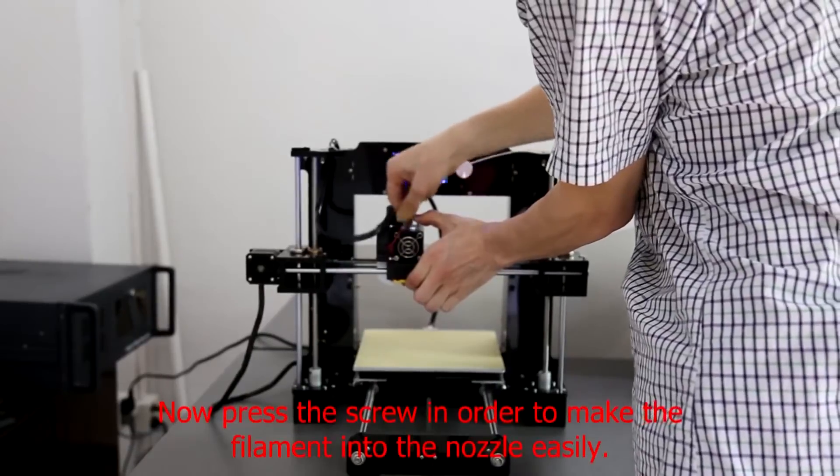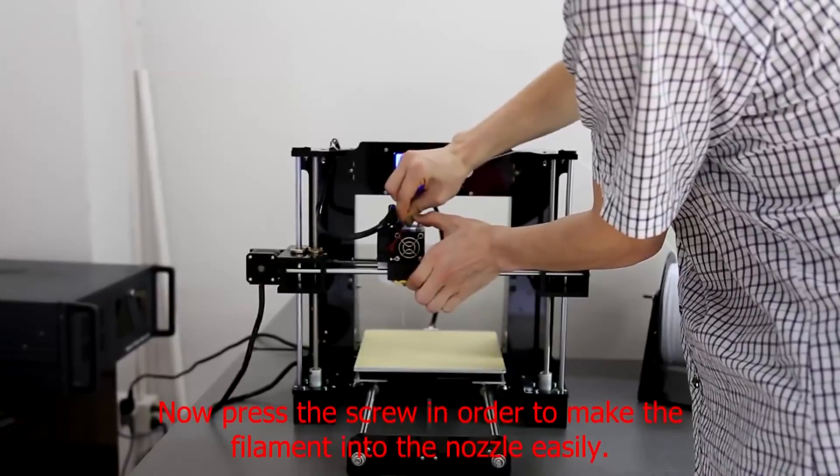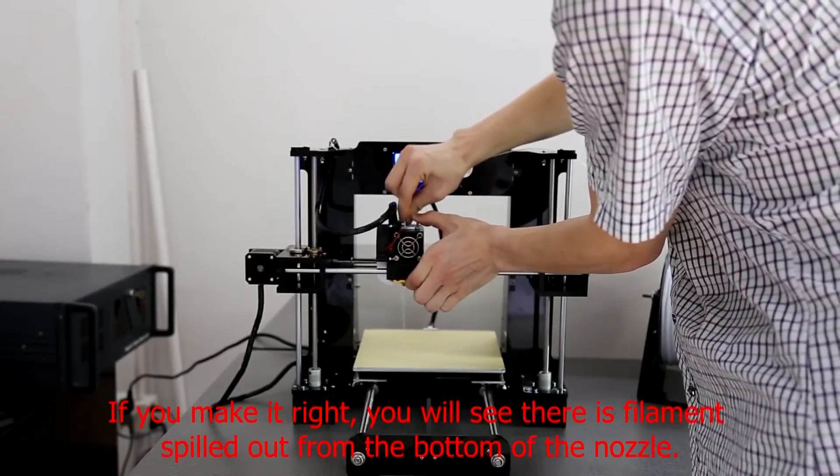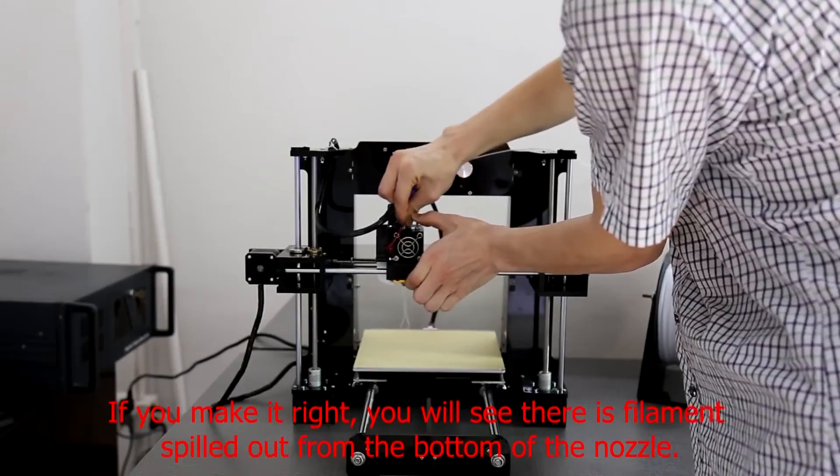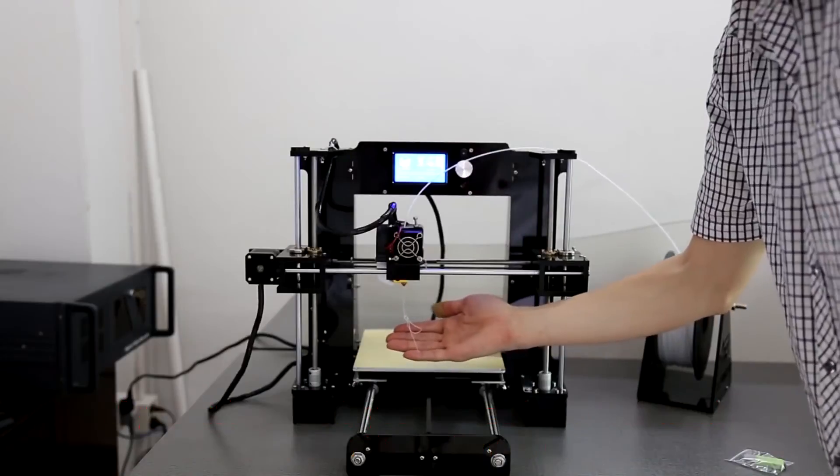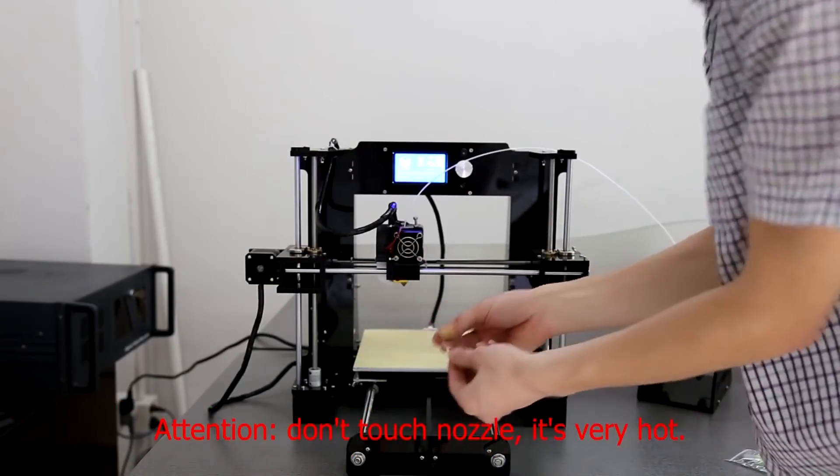Press the spring lever to make the filament enter the nozzle easily. If you do it correctly, you will see filament spill out from the bottom of the nozzle. Don't touch the nozzle, it's very hot.